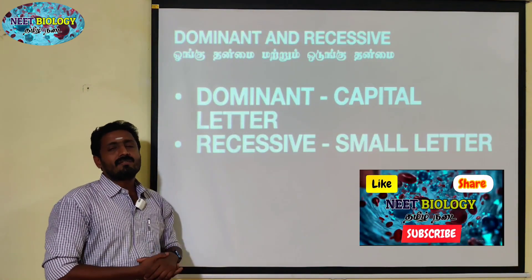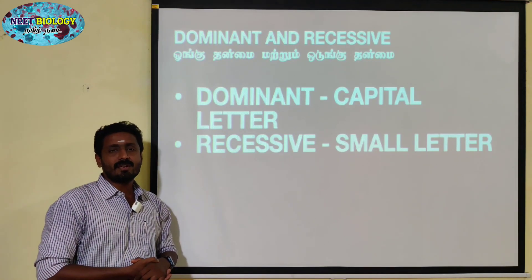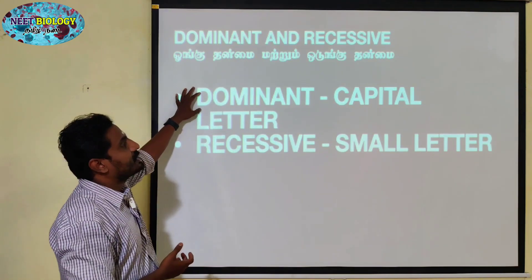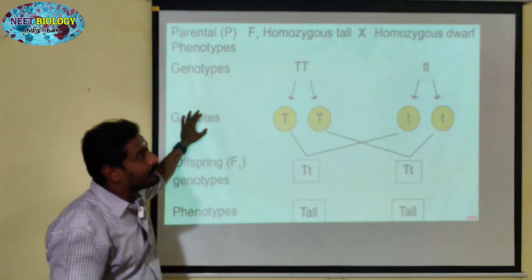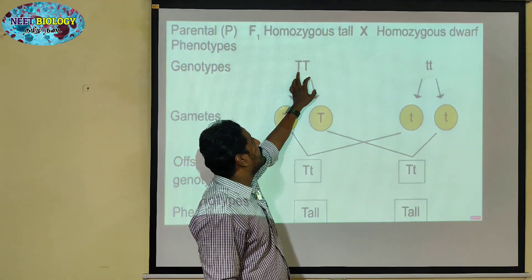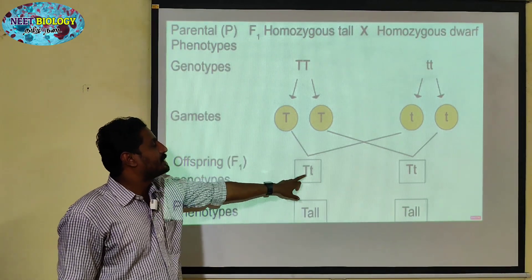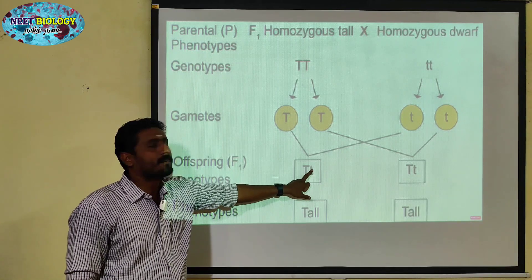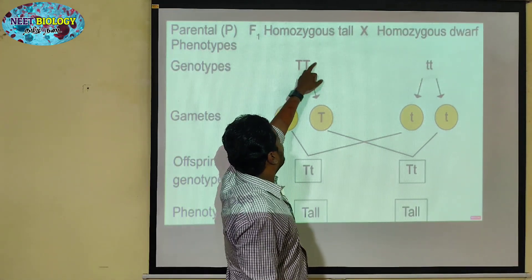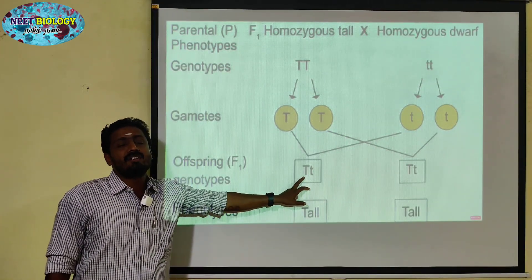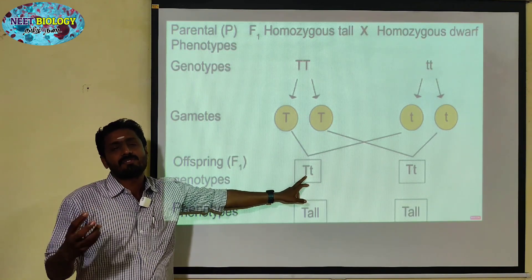Dominant and recessive: in the monohybrid cross, capital T capital T is the dominant condition, and small t is the recessive condition. Capital T is dominant, and it represents tallness. Even in the hybrid capital T small t, the dominant gene tallness is expressed.